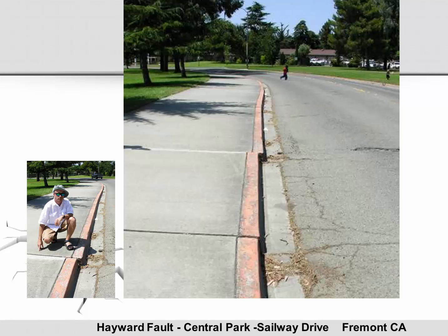This picture of the Hayward Fault was taken in Fremont, California in Central Park. You can see when the road planners built this road, they didn't intentionally offset the sidewalk and curbing. What happened is part of the road was built on the North American plate and the other part on the Pacific plate. Here's the fault line, and we can see the far section is moving northward while the side the photographer is standing on is moving towards the south.